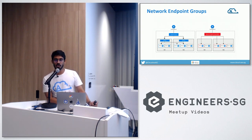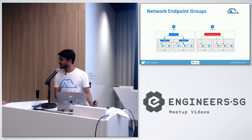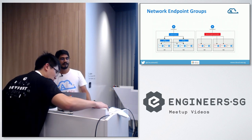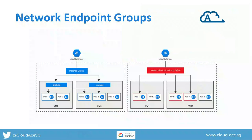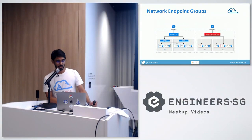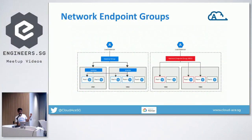Most of the time, the way load balancing is done is: once the traffic hits the load balancer, it is distributed across the backends. When we say the backends are virtual machines — so in traditional load balancing, VMs happen to be the backends, wherein traffic, after hitting the load balancer, is redirected to one of the VMs. The VM is the entity taking the traffic.